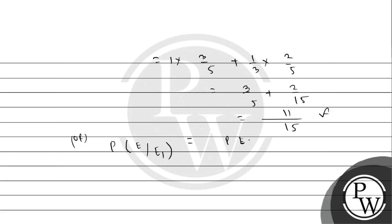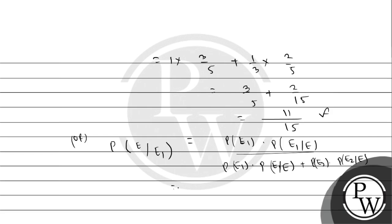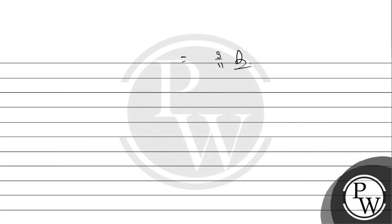Using Bayes' theorem: P(E1|E) = P(E1)·P(E|E1) divided by [P(E1)·P(E|E1) + P(E2)·P(E|E2)]. Substituting values: numerator = 3/5 × 1 = 3/5. Denominator = 11/15 (calculated in Part 3). So P(E1|E) = (3/5) ÷ (11/15) = (3/5) × (15/11) = 9/11.